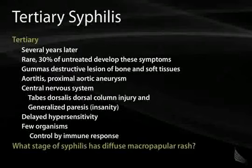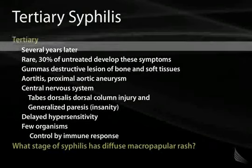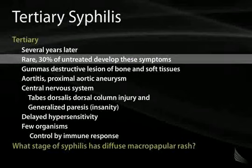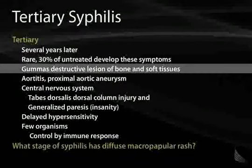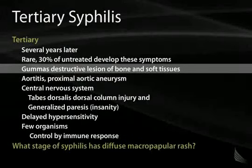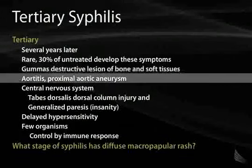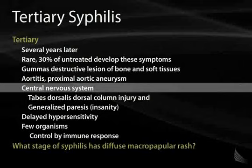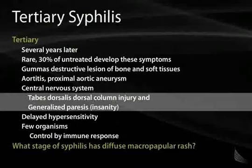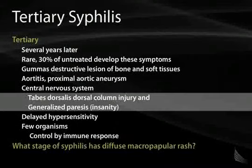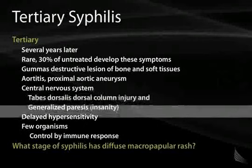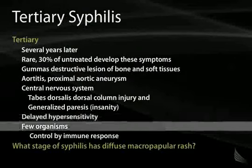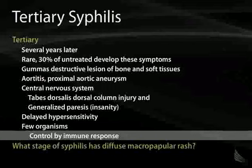Then symptoms quiet down and resolve until tertiary syphilis, which can appear 30 or more years later. It's rare — only 30% of untreated patients develop these symptoms. You can get gummas, which are destructive lesions of bone and soft tissue; aortitis or proximal aortic aneurysm; CNS involvement such as tabes dorsalis from posterior/dorsal column damage; generalized paresis; and delayed hypersensitivity. Tertiary syphilis is difficult to diagnose because there are few organisms and the disease is controlled by the immune response.